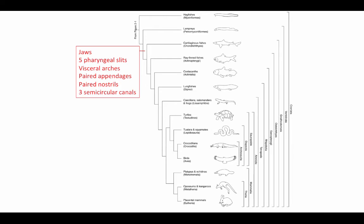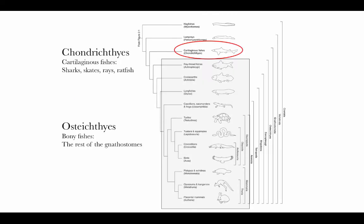This indicates use of the water column in addition to just the bottom of the ocean — you only need to detect side-to-side movement if you're basically a bottom dweller, but traveling up into the water column in three dimensions requires that third semicircular canal. The first split among the gnathostomes gives us two major lineages. One is the Chondrichthyes — the cartilaginous fishes such as sharks, skates, rays, and ratfish. The other branch leads to everything else on this cladogram, called the Osteichthyes, or the bony fish.